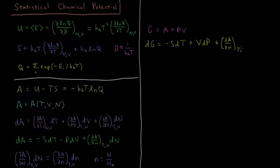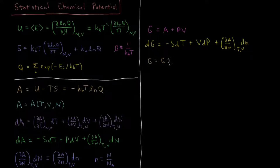So we still have the (∂A/∂N) term at constant T and V times dN left over as before, or we could express it with respect to number of moles. We can say that the Gibbs energy, instead of being a function of T, V, and N, is now a function of T, P, and N — either total number of particles or total number of moles.